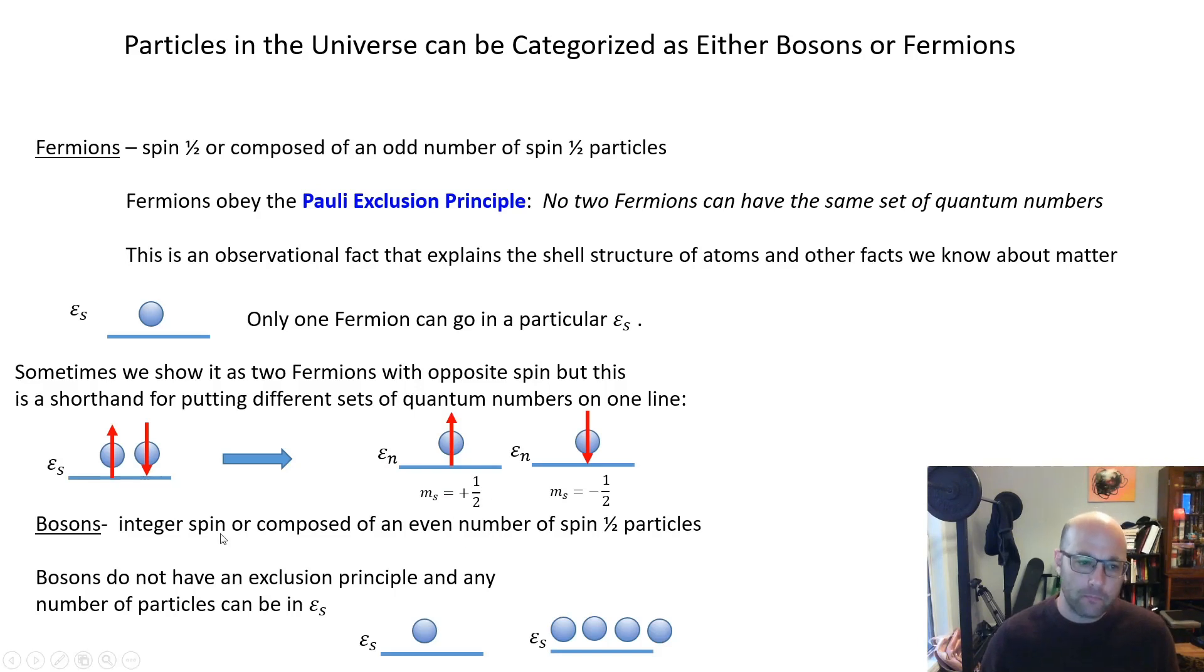By contrast, bosons are particles that either have integer spin or are composed of an even number of spin one-half fermions. So if you have an even number of spin one-half, the net spin will come out to be an integer. There is no exclusion principle for bosons, so you can put as many particles in an energy level as you want. You can put one, you can put four, you can put 10 to the 23rd, which is a really interesting possibility that we're going to keep talking about as we go on.